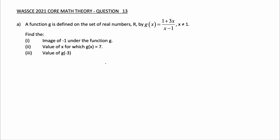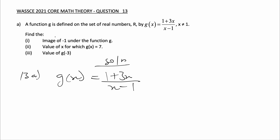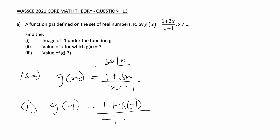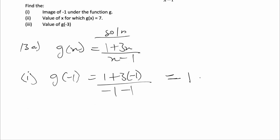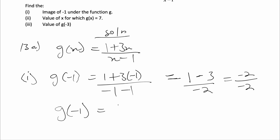Let's begin with our solution. We know g(x) = (1 + 3x) / (x - 1). We are asked to find the image of negative 1, so we find g(-1). Anywhere we see x in g(x), we put negative 1. So we have (1 + 3(-1)) / (-1 - 1), which equals (1 - 3) / (-2) = (-2) / (-2).